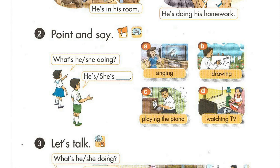Lesson 2. Activity 2. Point and say. What's she doing? She's singing. What's he doing? He's drawing.